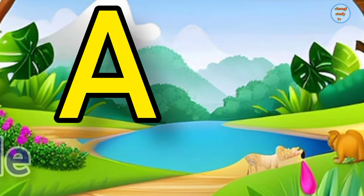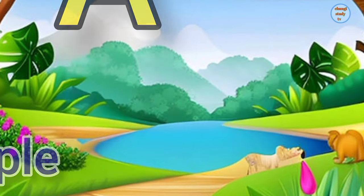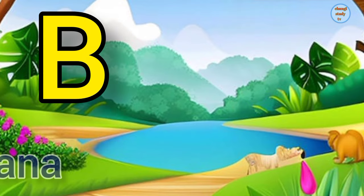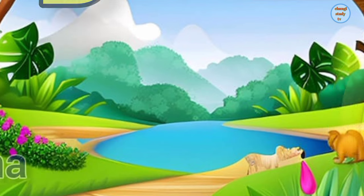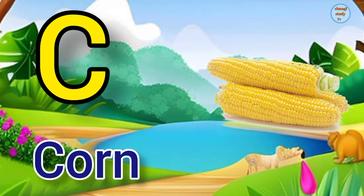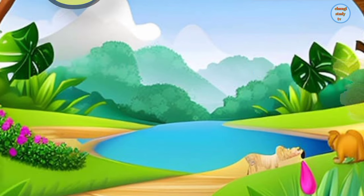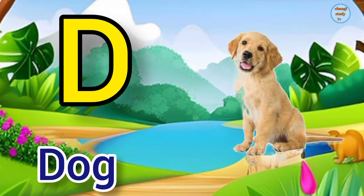A. A for apple, apple means save. B. B for banana, banana means kela. C. C for corn, corn means makka. D. D for dog, dog means kutta.